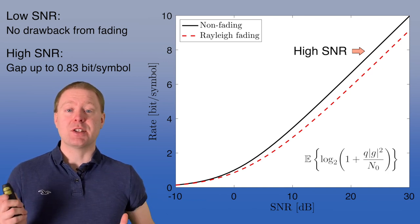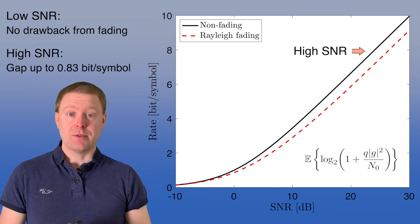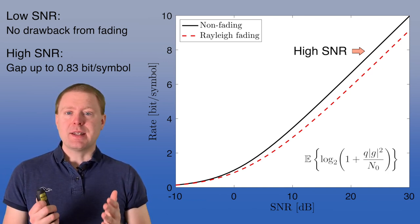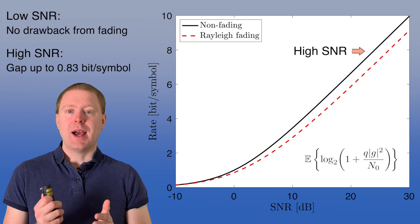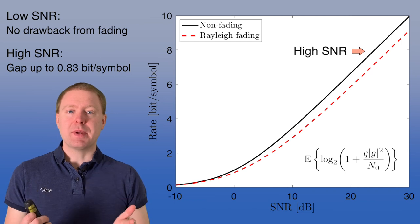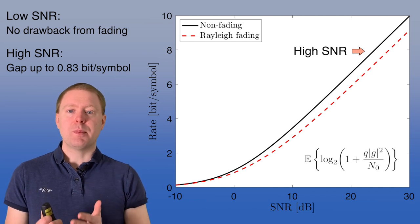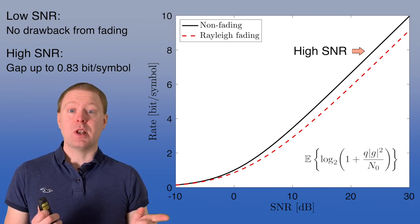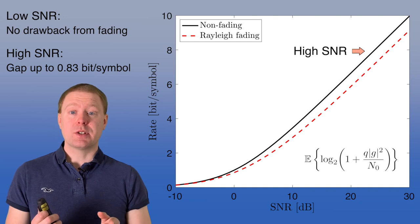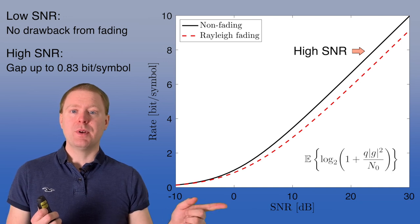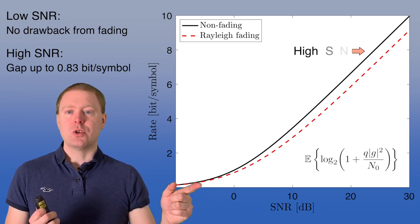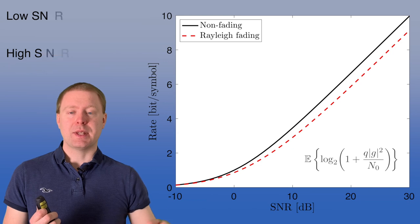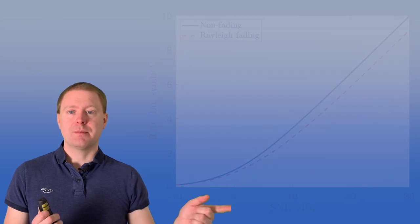The Rayleigh fading case is worse — up to 0.83 bits per symbol worse — which is what you achieve when the SNR goes to infinity. That is because of the logarithmic behavior of log(1 + SNR): if the SNR is sometimes lower than the average and sometimes above, you lose more when it is lower than you benefit when it goes up.